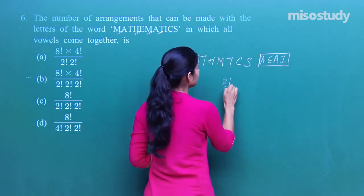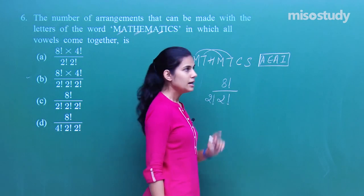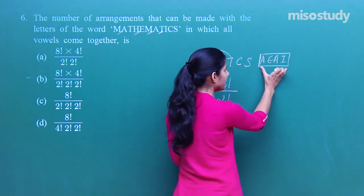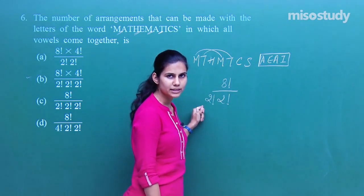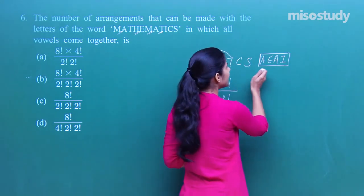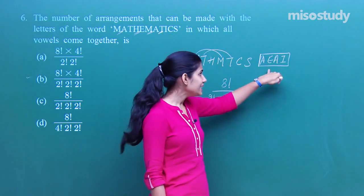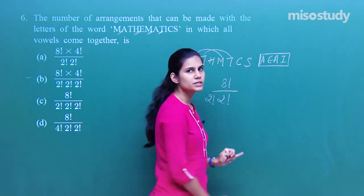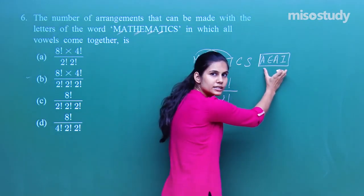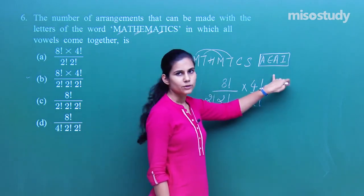These 8 letters can be arranged in 8! / (2! × 2!) ways, since there are two T's and two M's. But the four vowels themselves can also be internally arranged. There are 4! / 2! ways to arrange the vowels A, E, A, I (dividing by 2! for the two A's). Each arrangement of the vowels gives 8!/(2!×2!) arrangements of the full word, so we multiply both together.